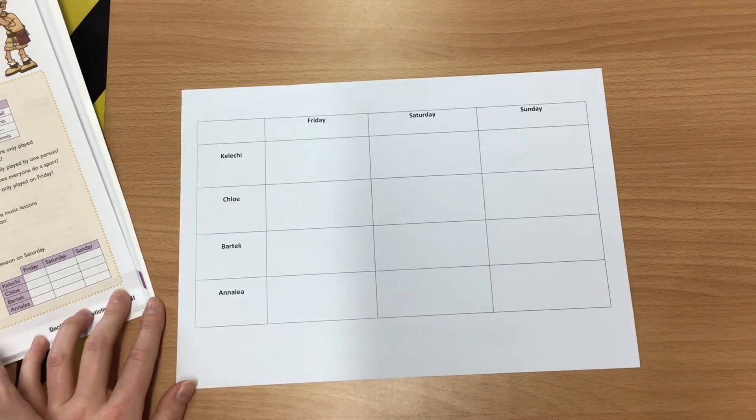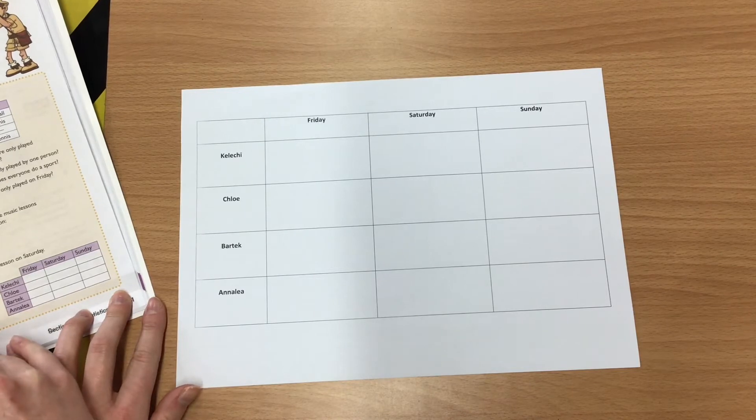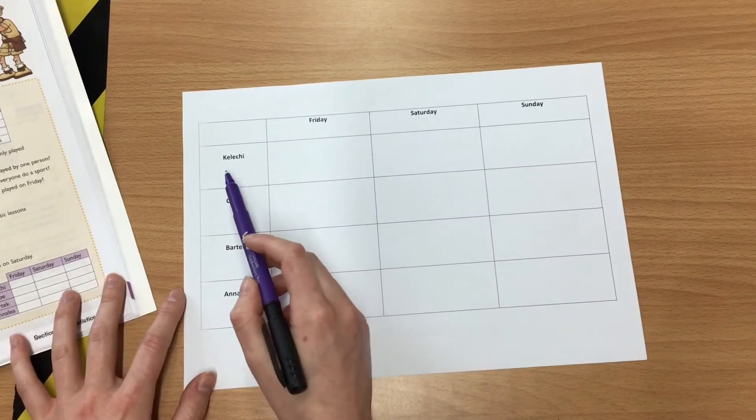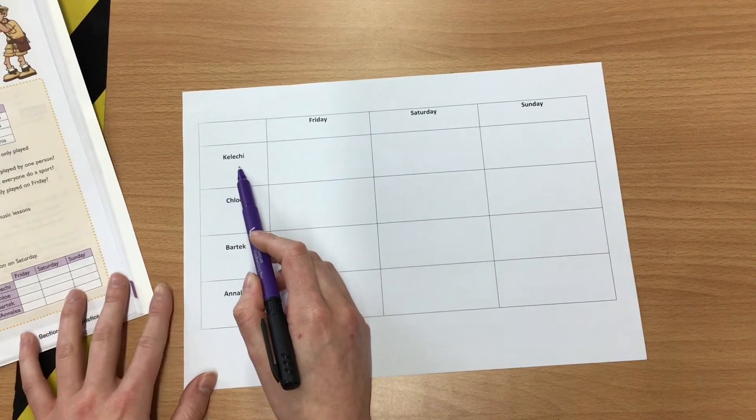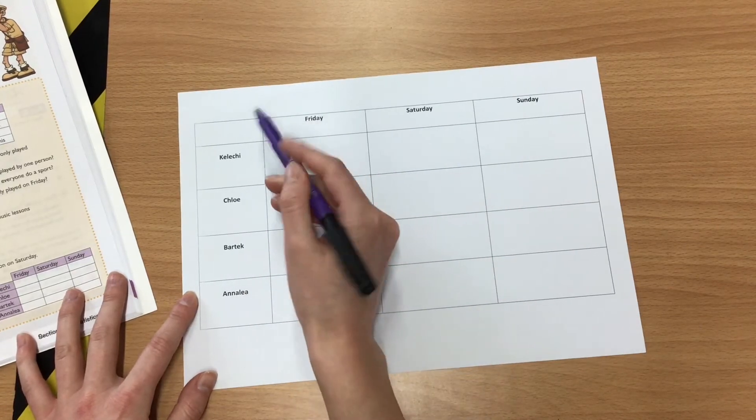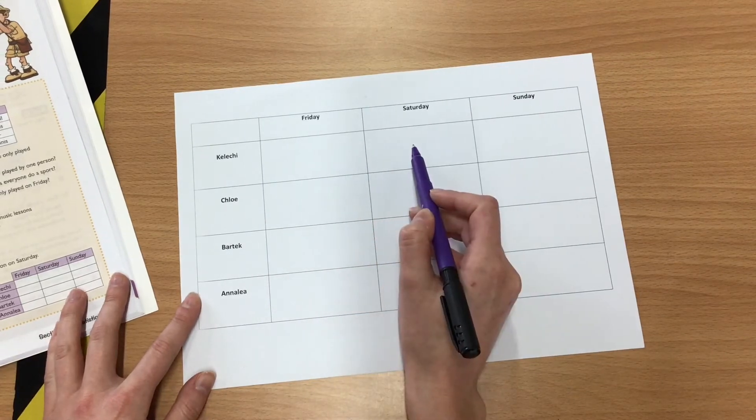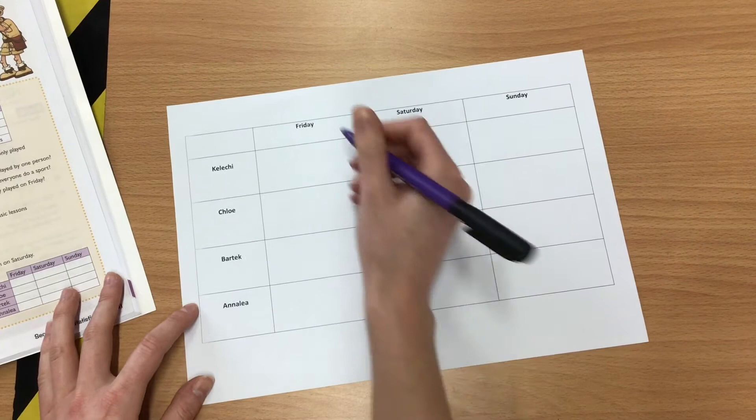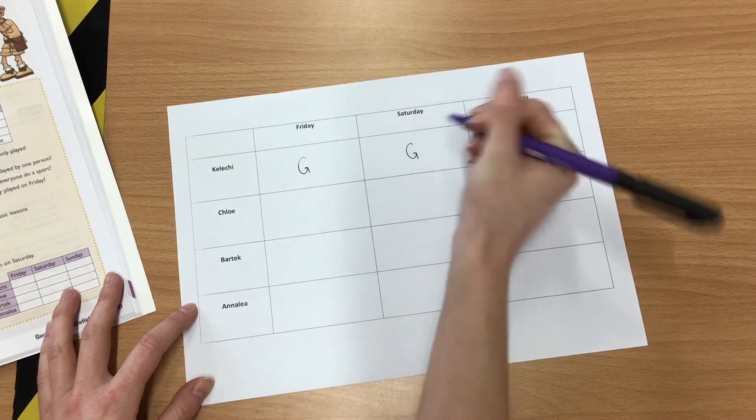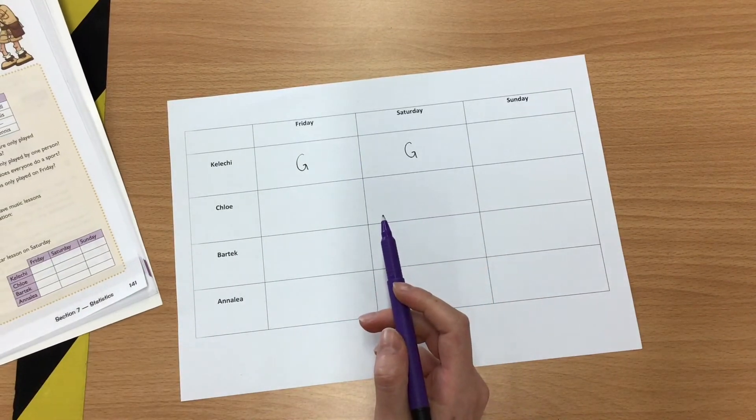So my first bullet point says, Kalichi has a guitar lesson on a Friday and Saturday. So what I need to do is I find Kalichi, and I go across to Friday and Saturday. So I've gone down to Kalichi and across to Friday and Saturday. And it says he has a guitar lesson, so I'm just going to write G for guitar lesson on Friday and Saturday.